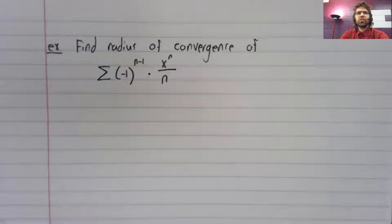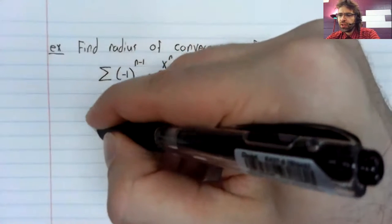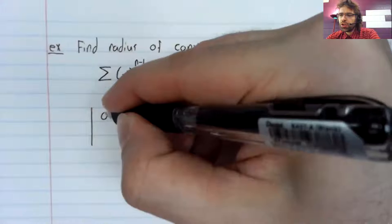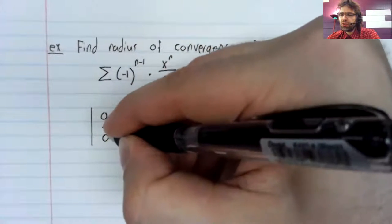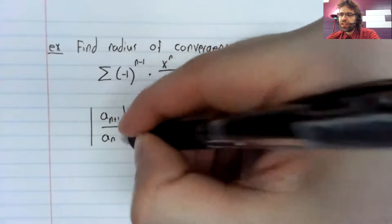Let's find a radius of convergence. We'll look at the absolute value of the ratio.